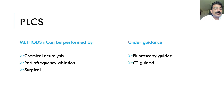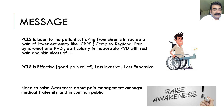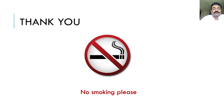Instead of chemical neurolysis, radiofrequency ablation of the ganglion is also available, though it has shown inferior results compared to chemical neurolysis. This procedure can also be performed under CT guidance instead of fluoroscopy. This procedure is truly a boon for patients suffering from chronic intractable pain of the lower limb — complex regional pain syndrome, and particularly inoperable peripheral vascular disease with rest pain and skin ulcers. It is very effective, less invasive, and awareness of this procedure should be raised not only among the general public but also in the medical fraternity. Thank you — no smoking, please.